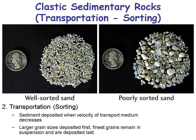Sorting: sand on the left is well-sorted — grains are all the same size. Sand on the right is poorly sorted — grains are not the same size. When sediment is transported, it sorts the material because the same speed of wind or water tends to carry the same size grains. Larger grains are deposited first because they're heavier and dump out of the water or wind. Then smaller grains are carried downstream, and last are the very fine materials.